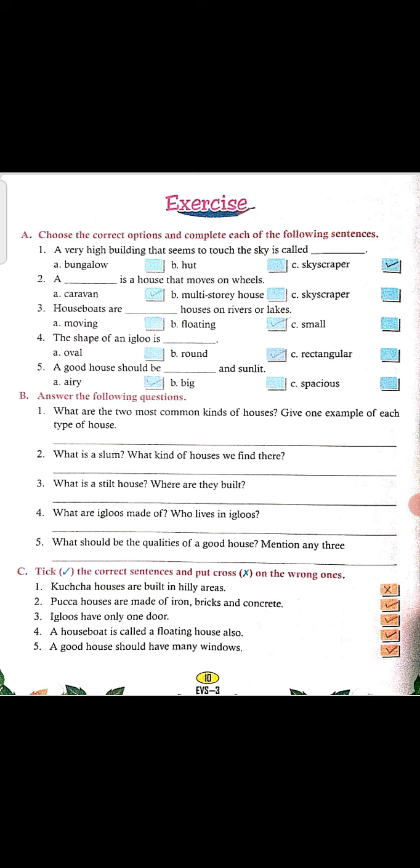Second is: a dash is a house that moves on wheels. So here is a house that moves on wheels — option B, houseboats, floating houses, will be right.